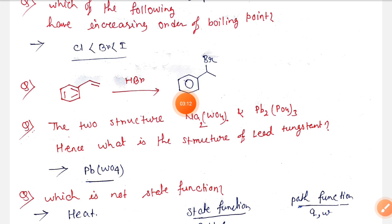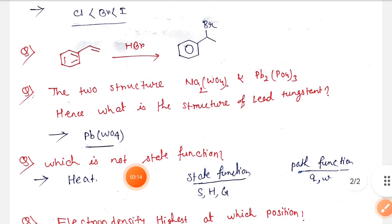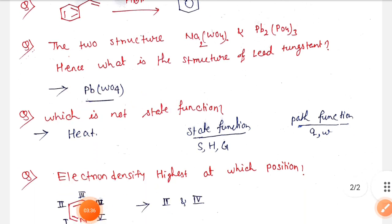Next, the two structures Na2WO4 and Pb3(PO4)2 are given, and hence what is the structure of lead tungsten? So from these two structures we can determine the valency of WO4 and Pb. So the structure is PbWO4.